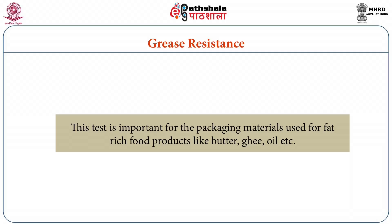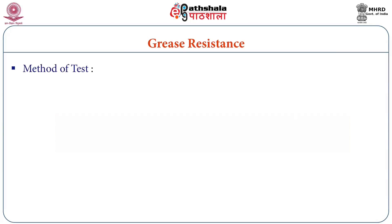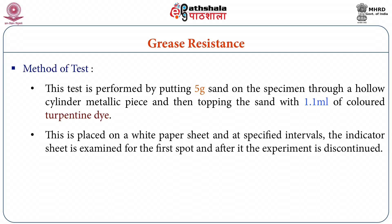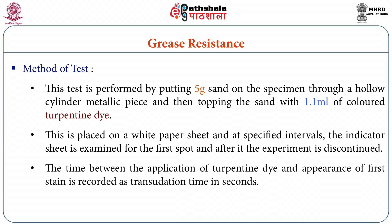The next test is grease resistance. It is important for packaging materials used for packing of fat-rich food products like butter, ghee, edible oil, etcetera. In this test, 5 grams of sand are put on a specimen through a hollow cylindrical metallic piece and then topped with 1.1 ml of colored turpentine dye. This is placed on a white paper sheet and at specified intervals the indicator sheet is examined for the first spot. The time between the application of turpentine dye and the appearance of the first stain is recorded as the transduction time in seconds.